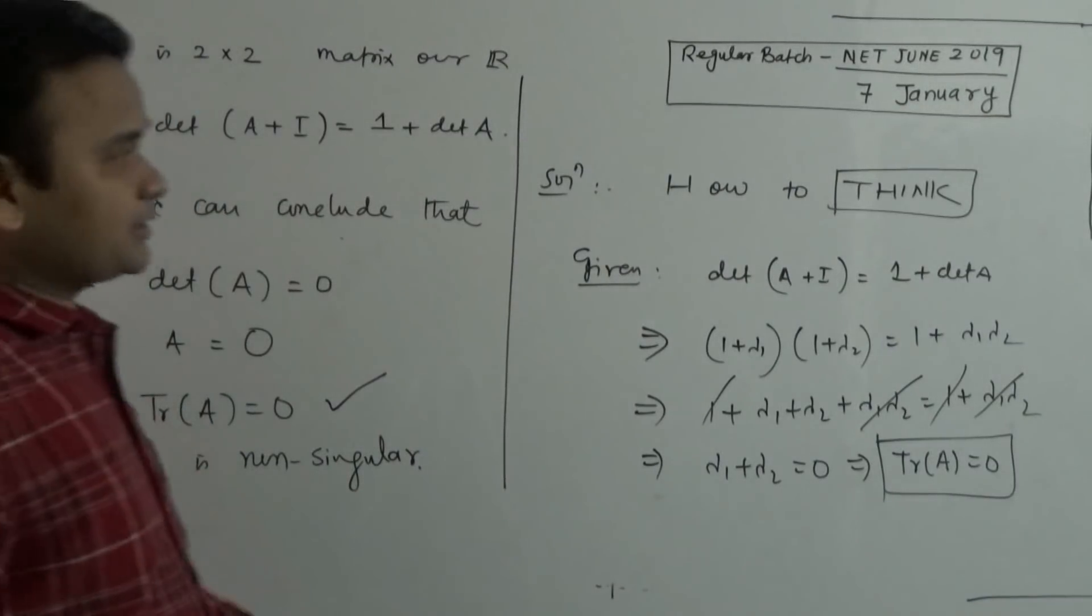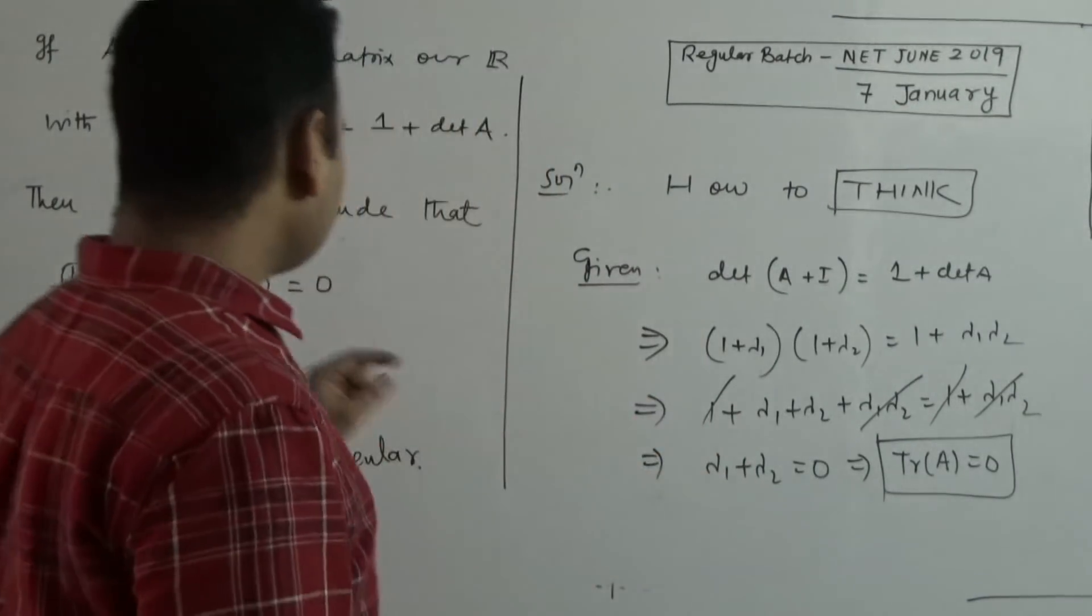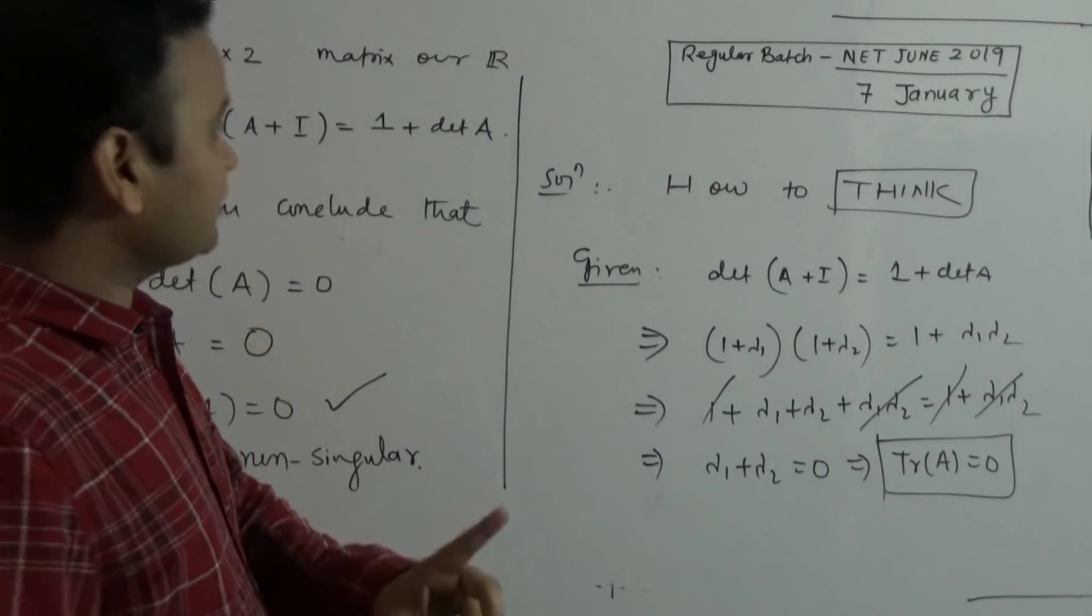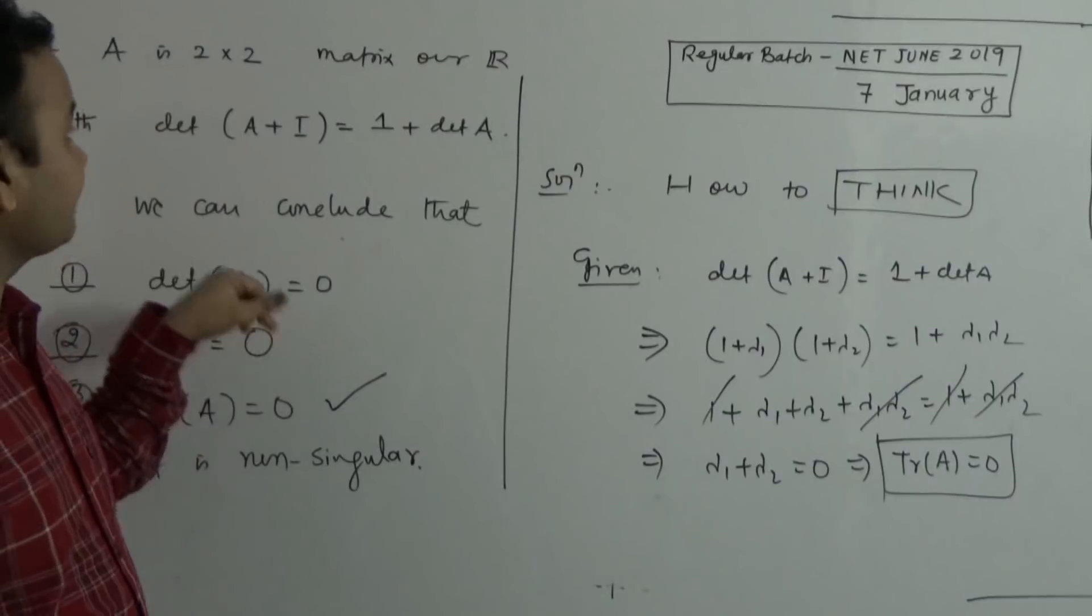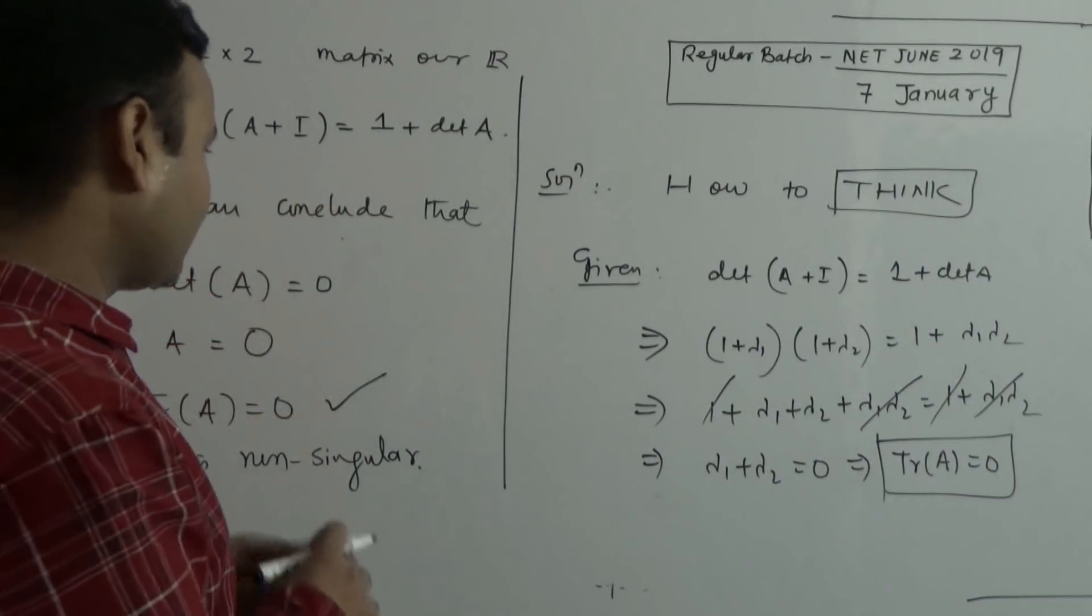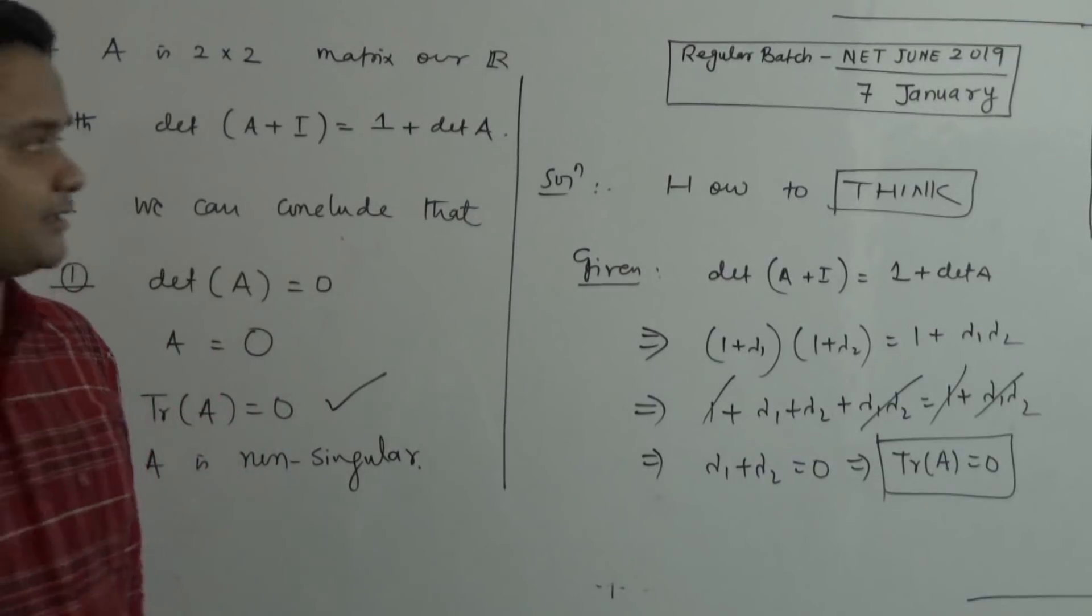But, right now we are not in the exam hall. At the same time we have also chances that, do I have counter example for this? So, I would like to give an exercise. Find a matrix A that satisfies this but fails to satisfy this. Find that counter example.